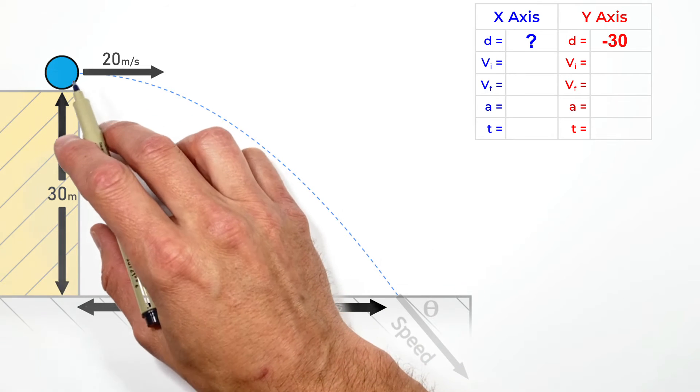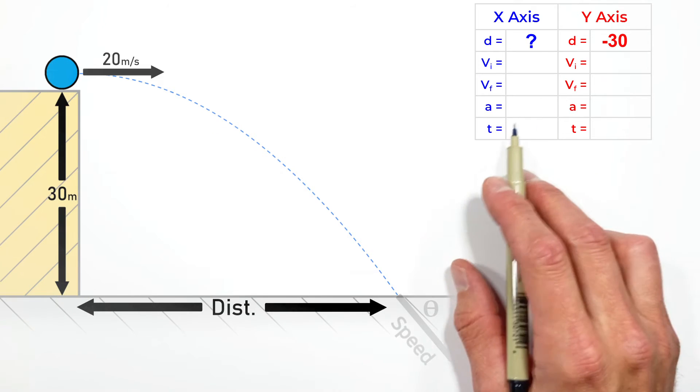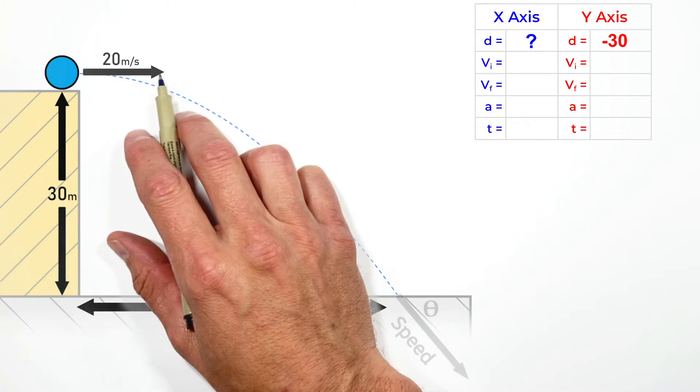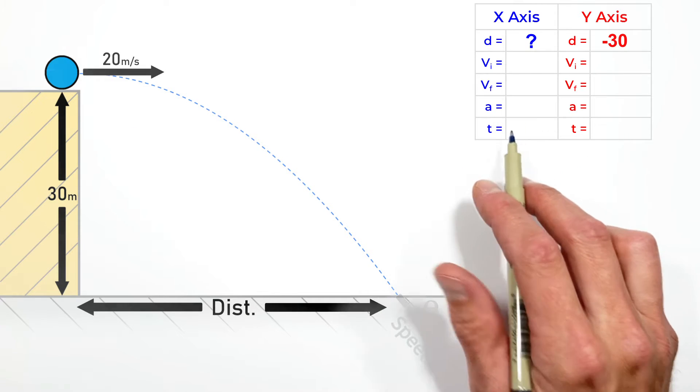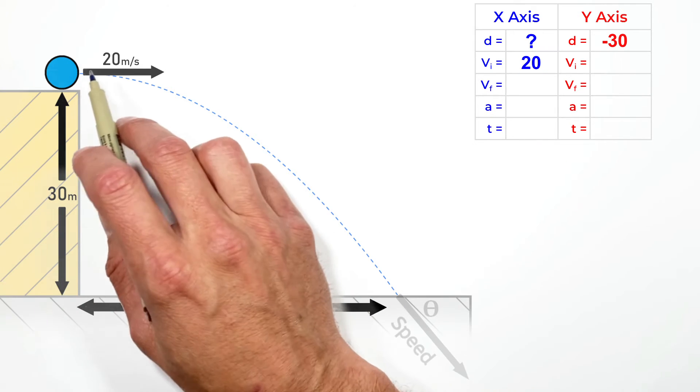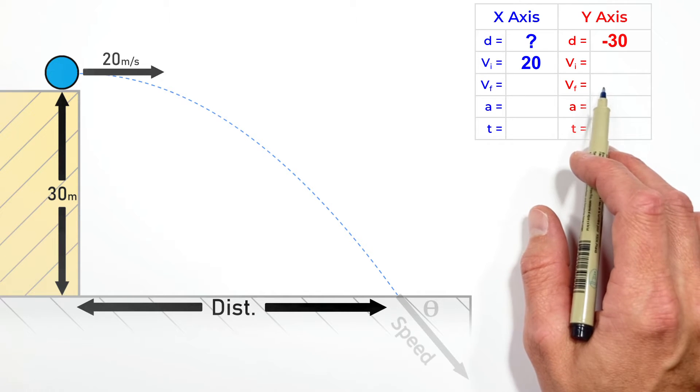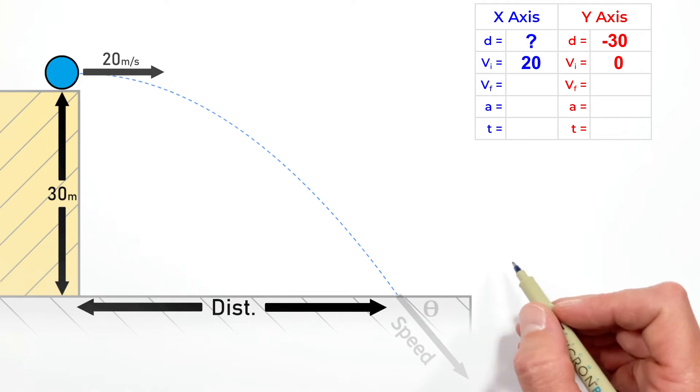Our ball was tossed at 20 meters per second horizontally, so we have to be careful on our table. The ball moving entirely horizontally has a horizontal component of velocity of 20, meaning this velocity is entirely in the horizontal axis. Vertically it's not moving at all, so the initial velocity in the y-axis is zero.